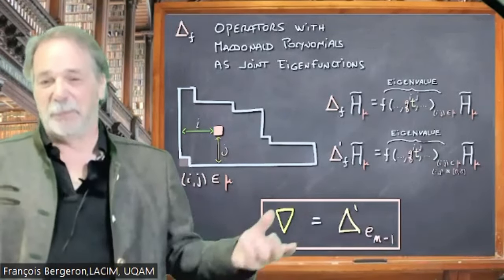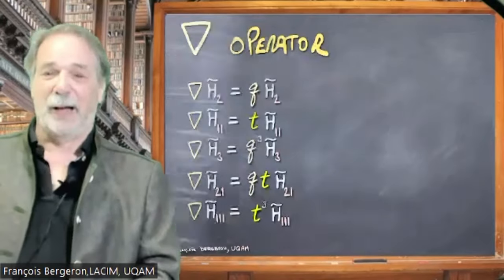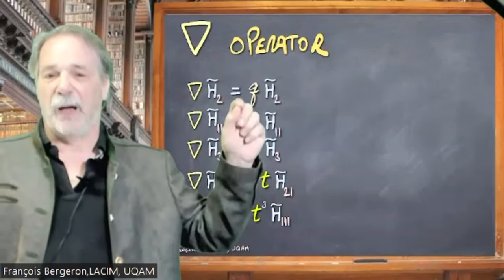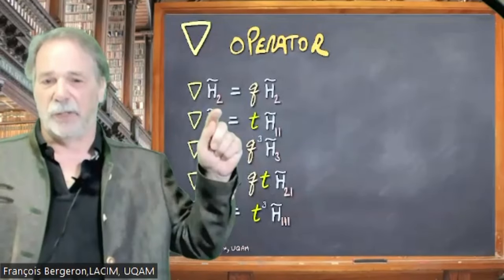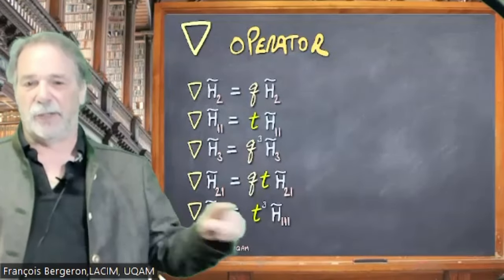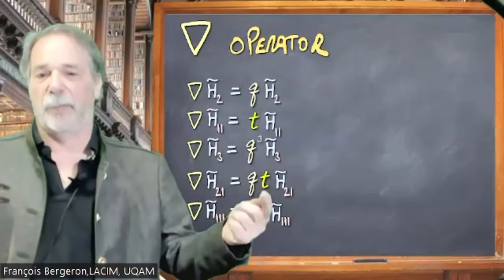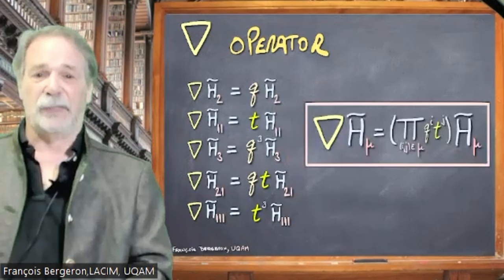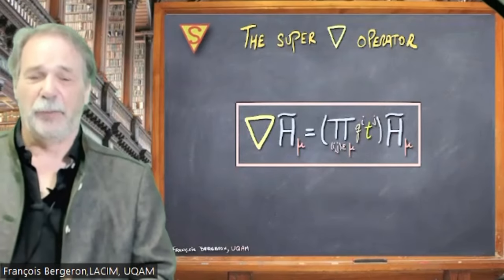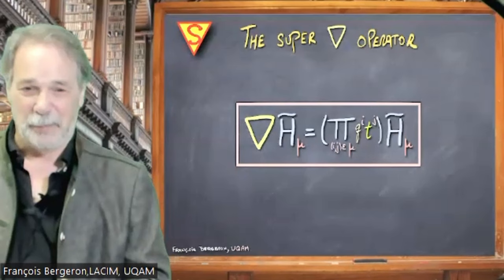And there are interesting variants of this and lots of work of the last 30 years has been done on such operators. And I like one especially called Nabla. It's been around for a while now. And the Nabla operator is very nice to understand. It just multiplies all of the power of the weights of the cells of the partition. So it was the q^i, t^j for all cells in the partition. So it's very simple. It just multiplies a McDonald polynomial by some power of q and a power of t, which is easy to use.